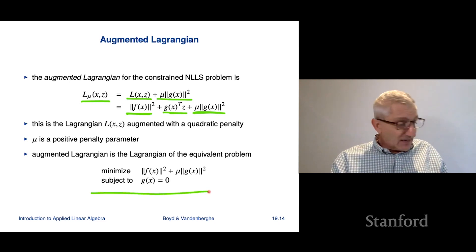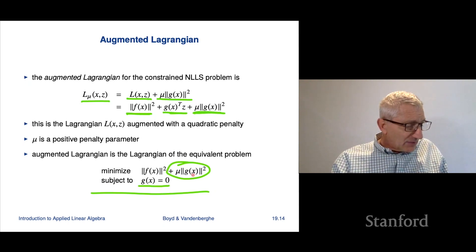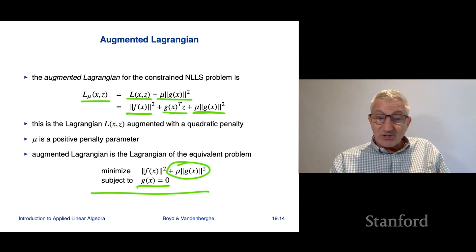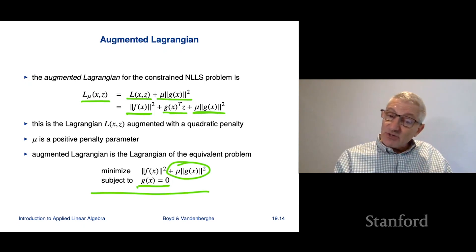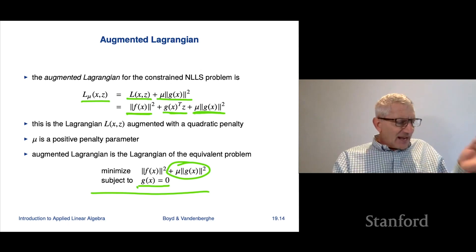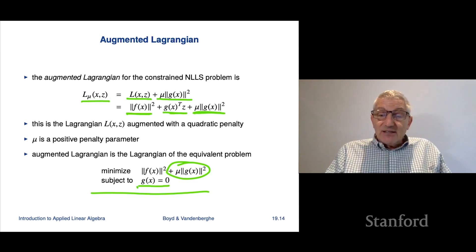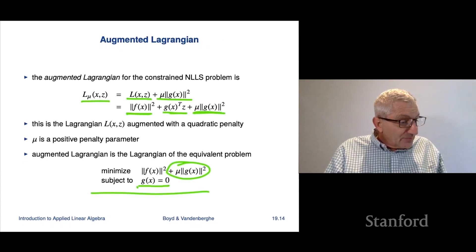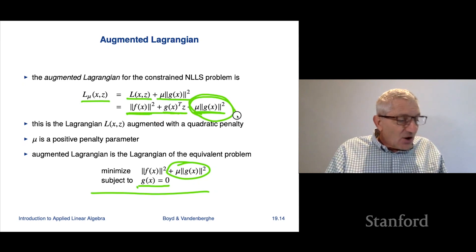You could think of the augmented Lagrangian as the Lagrangian of this. This is an equivalent problem to the original problem. The original problem doesn't have this term, but it's a bit silly because anything feasible for the original problem, this term goes away. So this problem is equivalent to the original problem. It's got the same set of minimizers. This is the Lagrangian, and that's the augmented term.